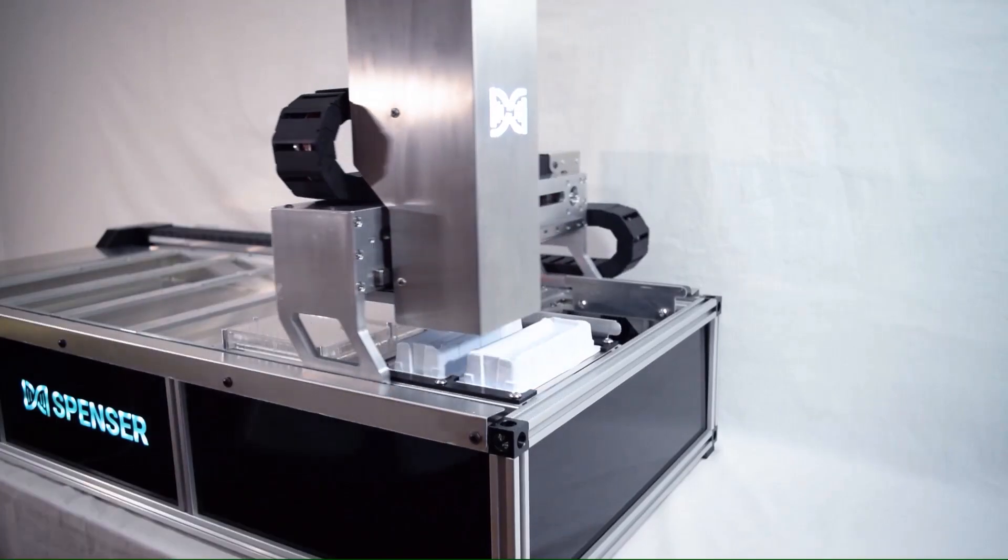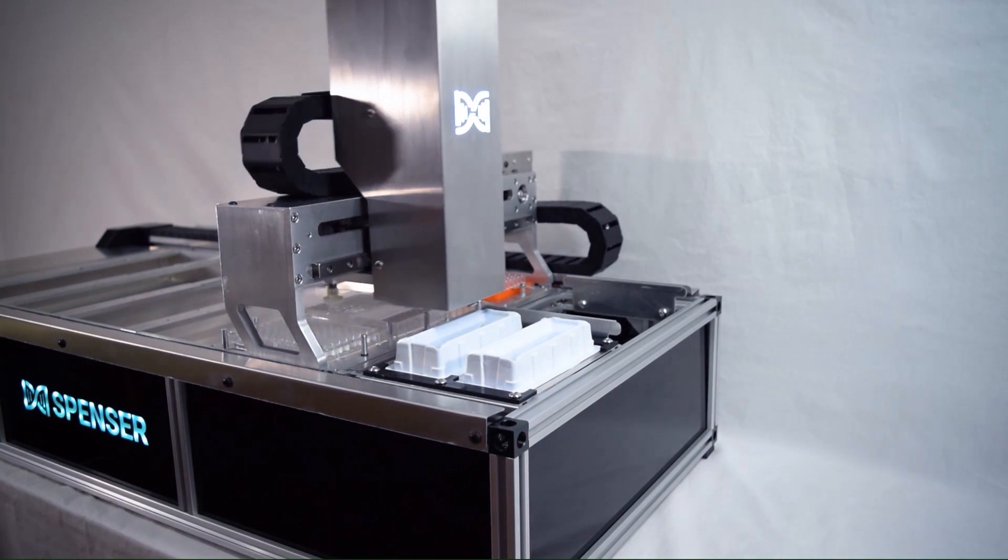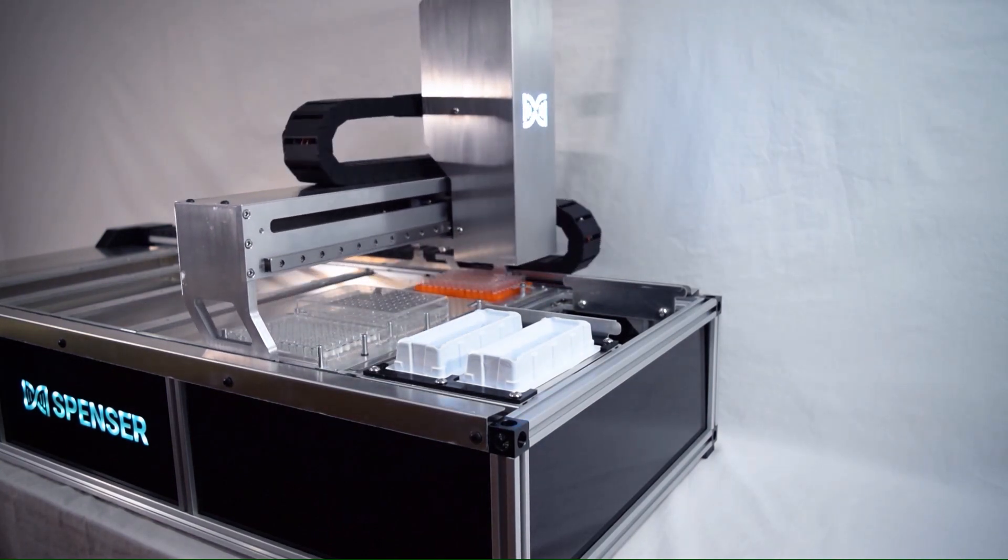The primary movements of the machine are achieved via a three axis gantry style motion system. Here you can see the machine performing a full seeding operation.